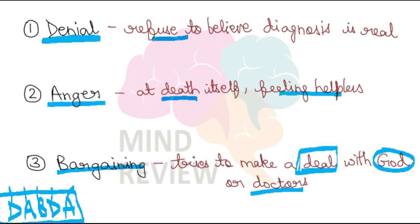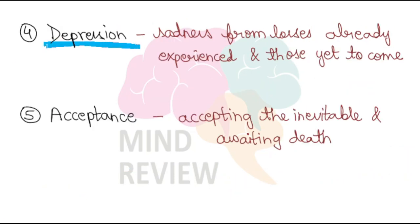After these first three reactions — Denial, Anger, and Bargaining — comes a state of Depression and sadness. This sadness arises for two reasons: the losses they have already experienced, such as losing their job or spending all their savings trying to get better; and the losses yet to come, like being separated from family and loved ones forever, not being able to see life ahead or future generations.